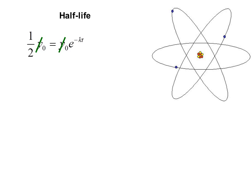We could cancel y sub 0 and then take the natural log of both sides to eliminate the e. We have ln one-half equals ln e to the negative kt. But ln one-half can be written ln 1 minus ln 2. That equals negative kt.